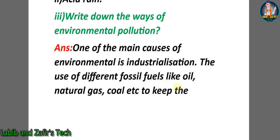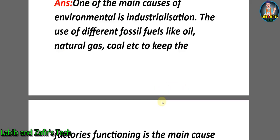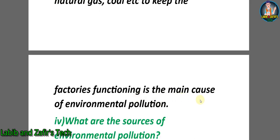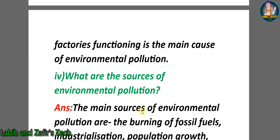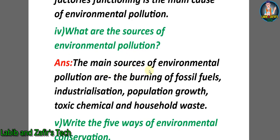The use of different fossil fuels like oil, natural gas, coal, etc., to keep factories functioning is the main cause of environmental pollution. Fourth question: what are the sources of environmental pollution? Answer: the main sources of environmental pollution are the burning of fossil fuels, industrialization, population growth, toxic chemicals, and household waste.